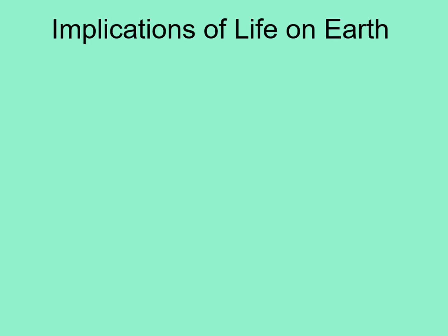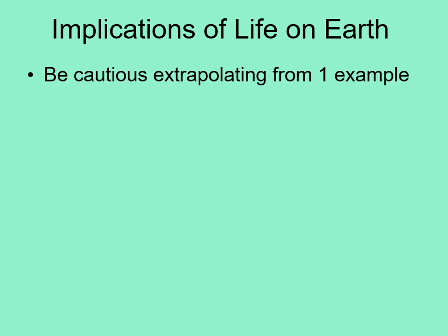What does the history of life on Earth tell us about what to expect of life elsewhere in the solar system? We should keep in mind that we have only one planet's history to go on here, and it's always dangerous to extrapolate from just one example. Until we know if and how life has evolved on many worlds, we won't be able to tell what's normal in the way life develops and what is unique to the history of our own planet. Nonetheless, we can try to pull some broad lessons from our planet's history.